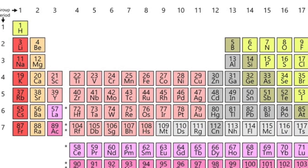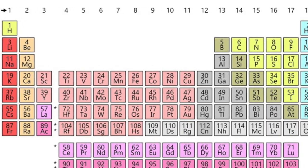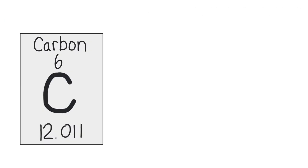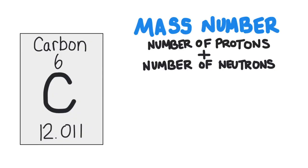There are only a few instances that all atoms in a naturally occurring sample of an element have the same mass. Most elements consist of atoms that have several different mass numbers. Recall that mass number is the number of protons plus the number of neutrons in the nucleus of an atom. The number of protons is what makes an element unique.